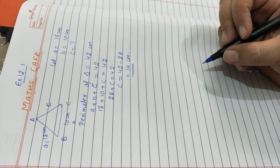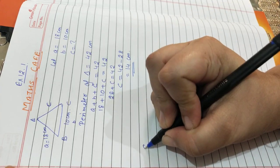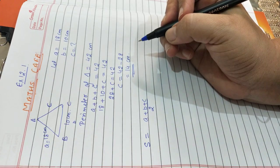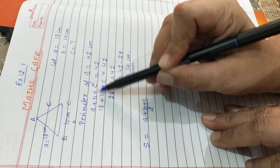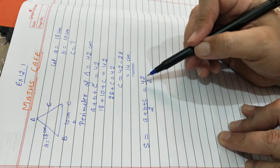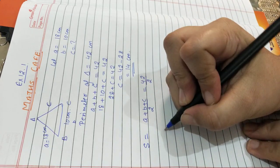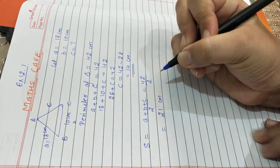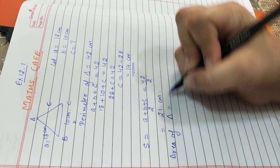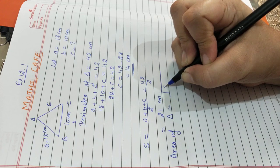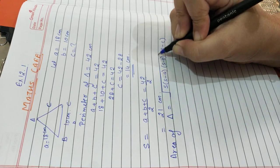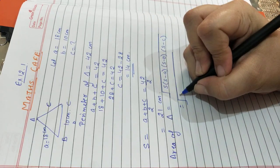Now the first step to find the area of the triangle is to find the semi-perimeter S. S = (A + B + C) / 2. It is given in the question that A + B + C = 42, so S = 42 / 2 = 21 centimeter. Now the area of the triangle using Heron's formula is: area = √(S × (S−A) × (S−B) × (S−C)). Now substitute the values: S = 21.